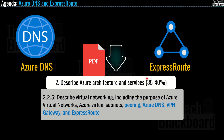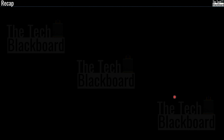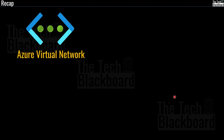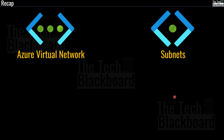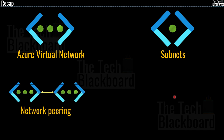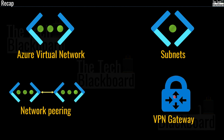Links to the free PDF file are given in the description box. For viewers who have recently joined us, in the last few episodes we have already covered virtual networking, including the purpose of Azure virtual networks, Azure virtual subnets, Azure network peering, and VPN gateway. In case you missed those episodes, please go ahead and watch the previous parts. Links to all of those are shared in the description box.